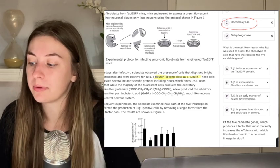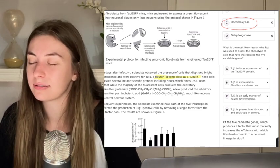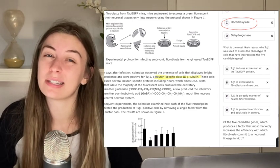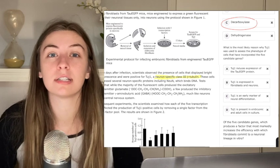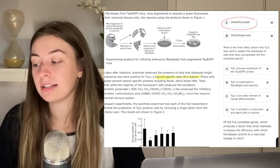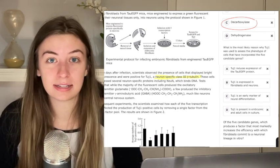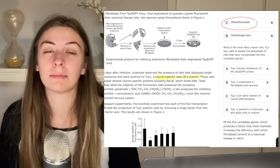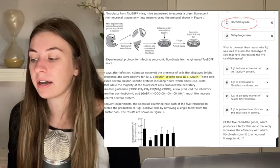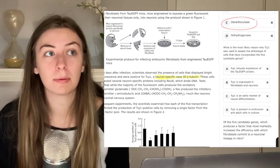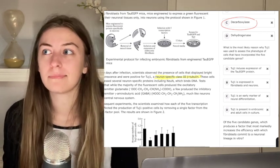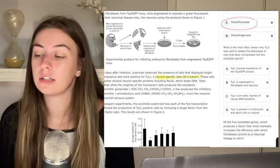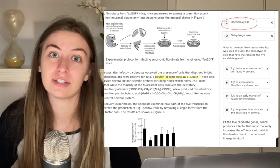B, TUJ1 is expressed in fibroblastin neurons. Ooh, this is an attractive answer because what I really want the answer choice to say is that TUJ1 is expressed in neurons. And this just has the little fibroblast in there that can't hurt too bad, right? Wrong. Fibroblast makes this answer choice completely wrong. And think about it. If TUJ1 was expressed in fibroblastin neurons, how could they tell the difference between their cells in the end of this experiment? They couldn't. It's probably not the right answer even though it's very attractive.